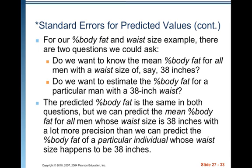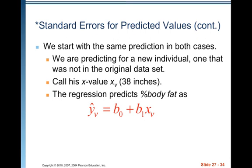Remember that just from our sampling distribution discussion. We start with the same prediction in both cases, and we are predicting for a new individual — one that was not in the original data set. Call his x value xv, 38 inches. The regression predicts percent body fat as y-hat-v, which equals b-naught plus b1 times xv.